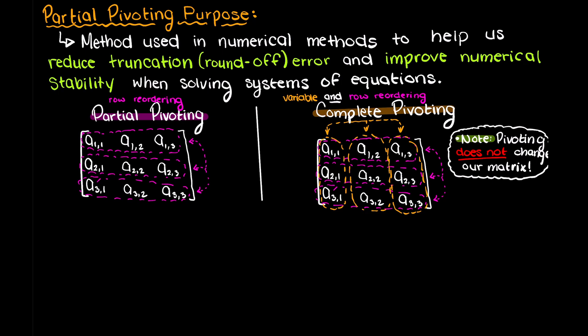So now that we know what partial pivoting is and why we might want to use it, how do we actually go about implementing partial pivoting and why does it reduce truncation error?